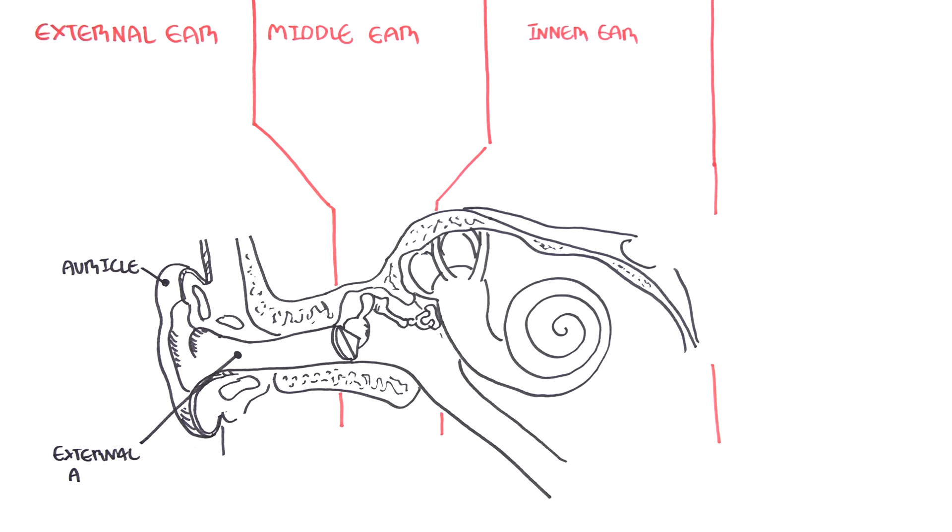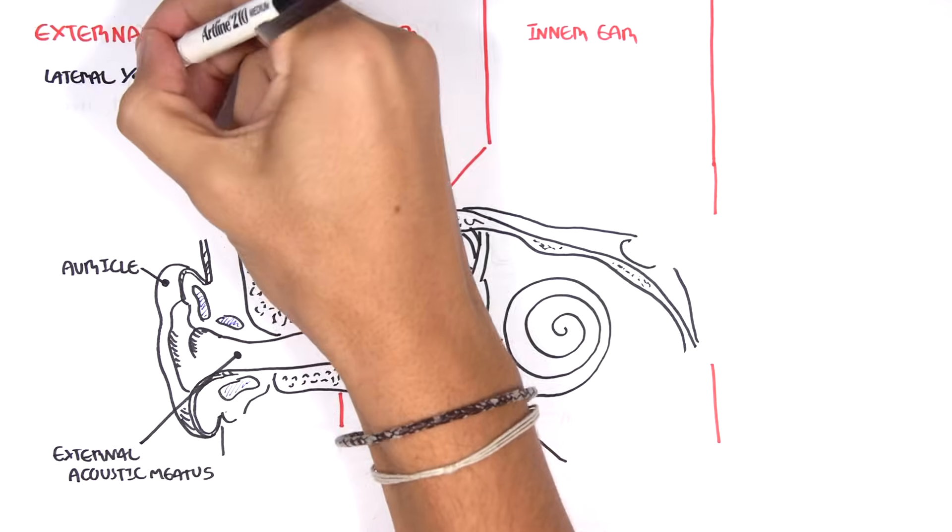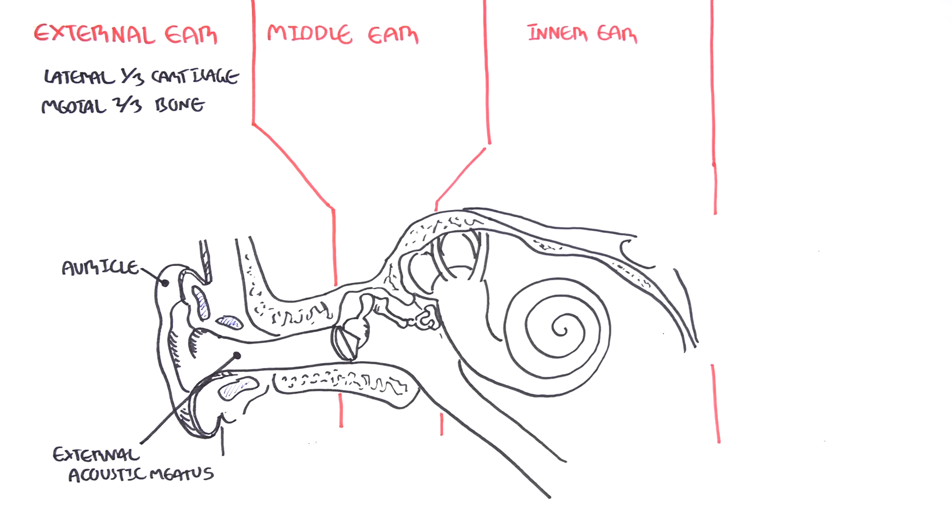The lateral one third of the external acoustic meatus is surrounded by cartilage. And then the inner two thirds of the external acoustic meatus, so the more medial, is made up of bone.